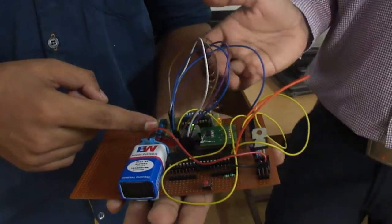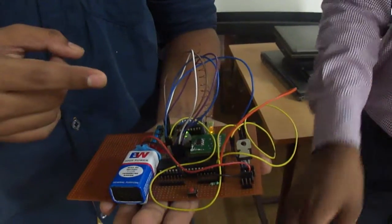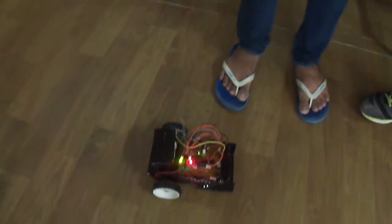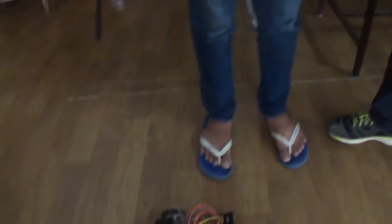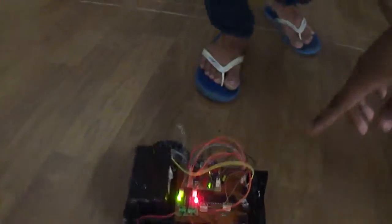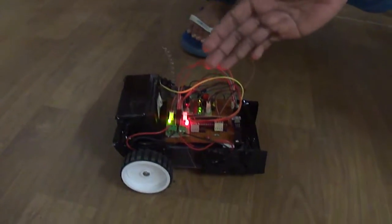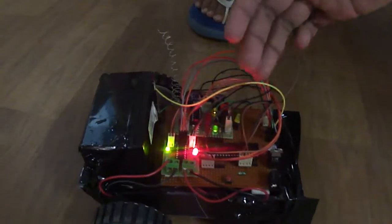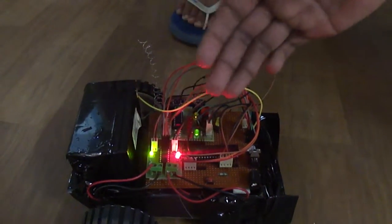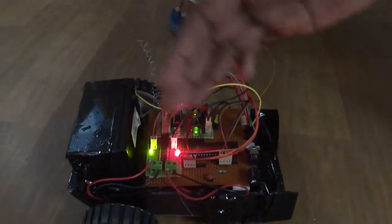The receiver end will receive the RF module and send it to the microcontroller. Through L293D IC, we will send the microcontroller values to the motor driver IC, which will work the motor.